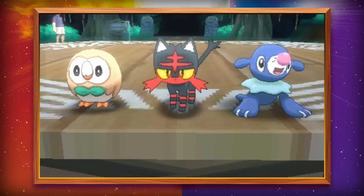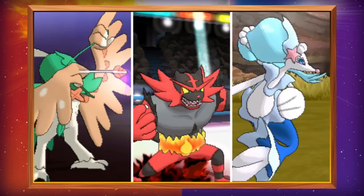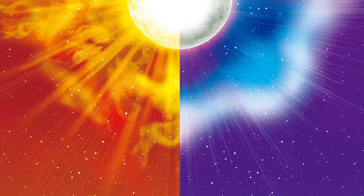So really should you start with Rowlet, Litten, or Popplio? In the end you are going to come up with Decidueye, Incineroar, and Primarina, but really if you're playing the game which one is going to be the most powerful for you?